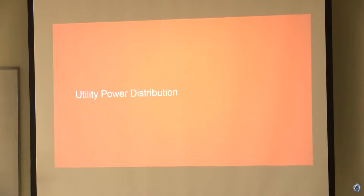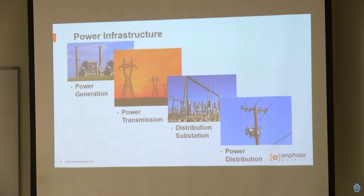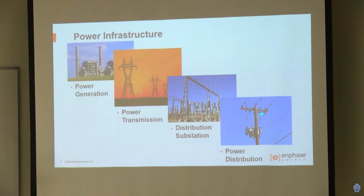Let's talk about utility power distribution. The way it works today: we have power generation from a gas-fired plant, coal plant, or nuclear plant. Then there are transmission lines — the tall towers you've seen. They take power to a distribution substation. There's actually a big substation at Old Adobe and Freitas Road. These are really high voltage lines, around 100,000 volts. A transformer in the distribution center takes it down to thousands of volts, and then another group of transformers drops it down to the 120 or 240 volts in your house.